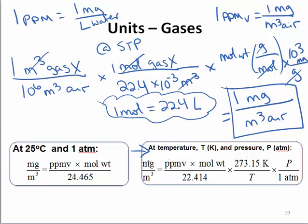Note that milligrams per meter cubed of a gas can be converted to parts per million by volume or vice versa using molecular weight, temperature in Kelvin, and pressure in atmospheres.